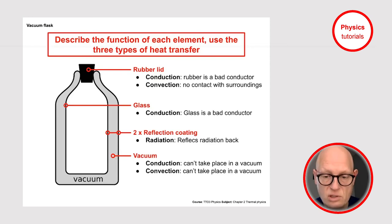So no conduction, no convection. So within this vacuum layer, the only heat transfer which can take place is radiation. And because of the reflection coating, that will be minimized as much as possible. Therefore your vacuum flask can keep your drink hot for a much longer time than if you wouldn't take all these measures to prevent heat transfer.